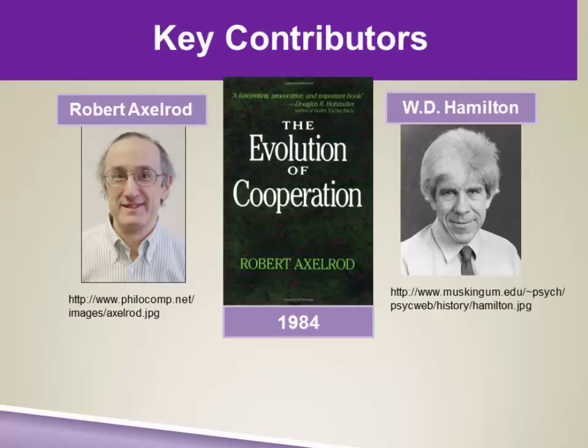The key contributors to the Iterated Prisoner's Dilemma are Robert Axelrod, a political scientist who put together a Prisoner's Dilemma tournament in the late 1970s, and William D. Hamilton, who we've already met, who co-authored The Evolution of Cooperation with Axelrod. They first published a paper in the journal Science in 1981, and then the book came out in 1984. Hamilton is credited as co-author of Chapter 5, which relates this to evolutionary biology. Hamilton probably had some influence on the entire evolutionary argument of the book, and evolution may not have been in the title without his influence.